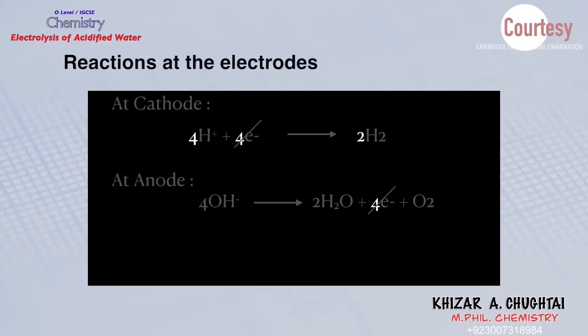Electrons can be cancelled out in both half equations. The overall equation can then be simplified. The overall chemical equation clearly shows the relationship between the two gases.